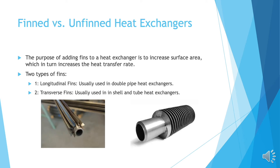This brings me to finned versus unfinned heat exchangers. Adding fins to heat exchangers is important because it increases the surface area of the exchanger, which in turn increases the heat transfer rate. This will not always be necessary, but if you have a low heat transfer coefficient on the outside of the tubes, it might be worth considering adding fins to improve efficacy. There are two types of fins: longitudinal and transverse fins, each with their own expertise. Longitudinal fins are better for when you want the flow outside of the tube to run along the entire length of the tube, like double pipe heat exchangers. Transverse fins are more often used for shell and tube heat exchangers or turbulent fluids because they can restrict movement.